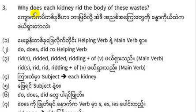The auxiliary verb is do, does, did. The main verb is rid. So we have: rid, rids, ridded, ridding.